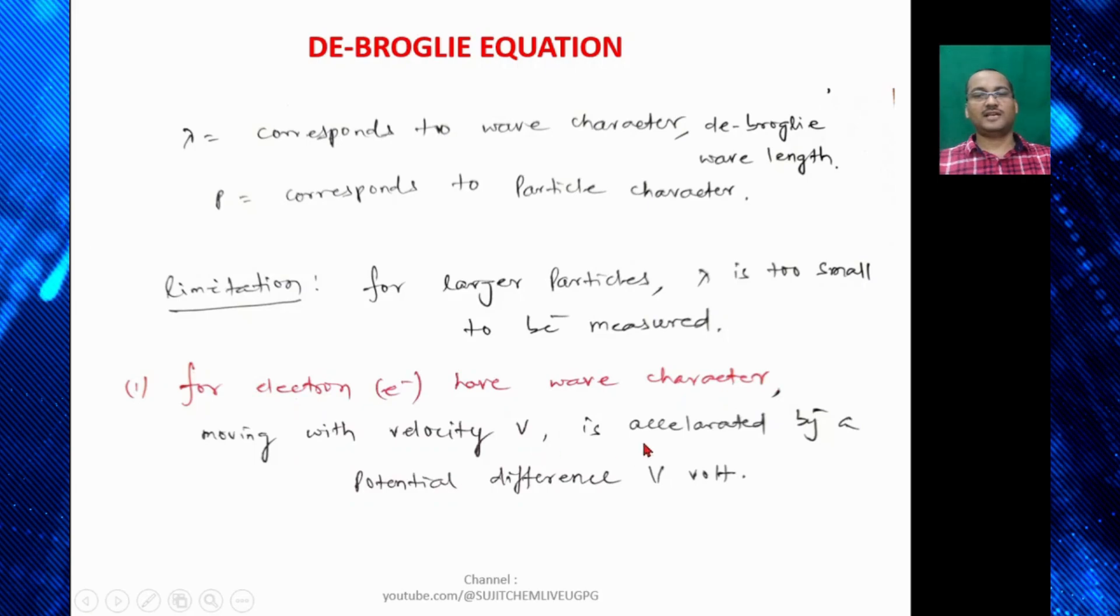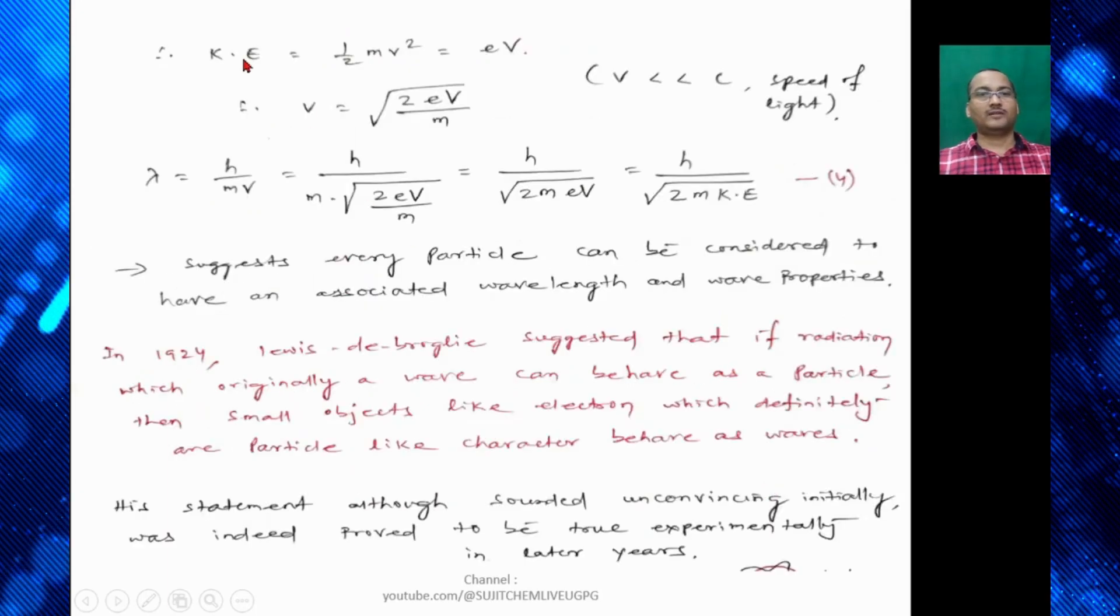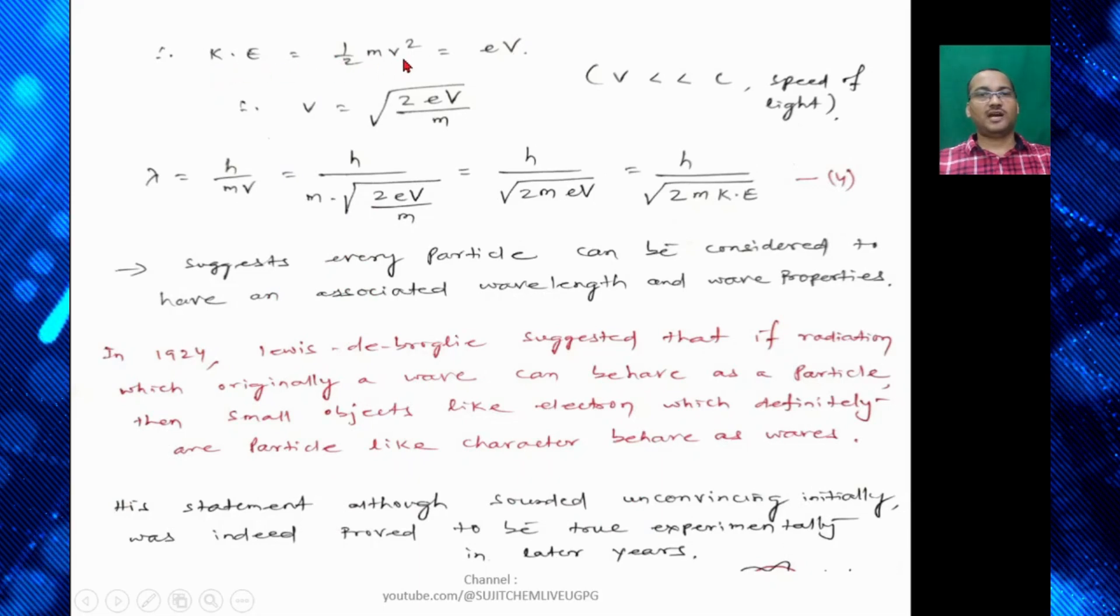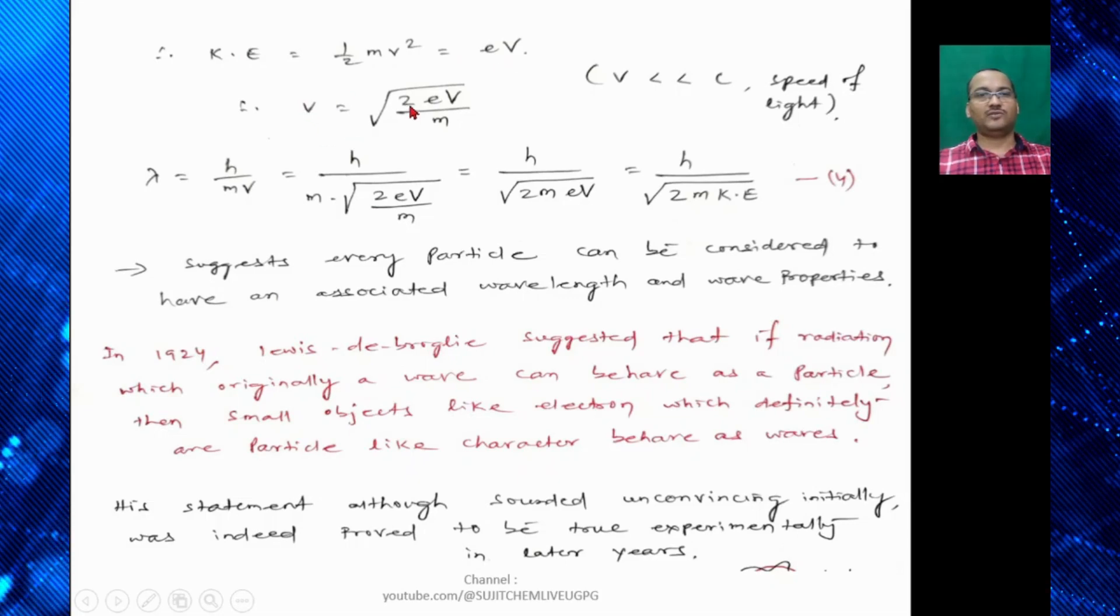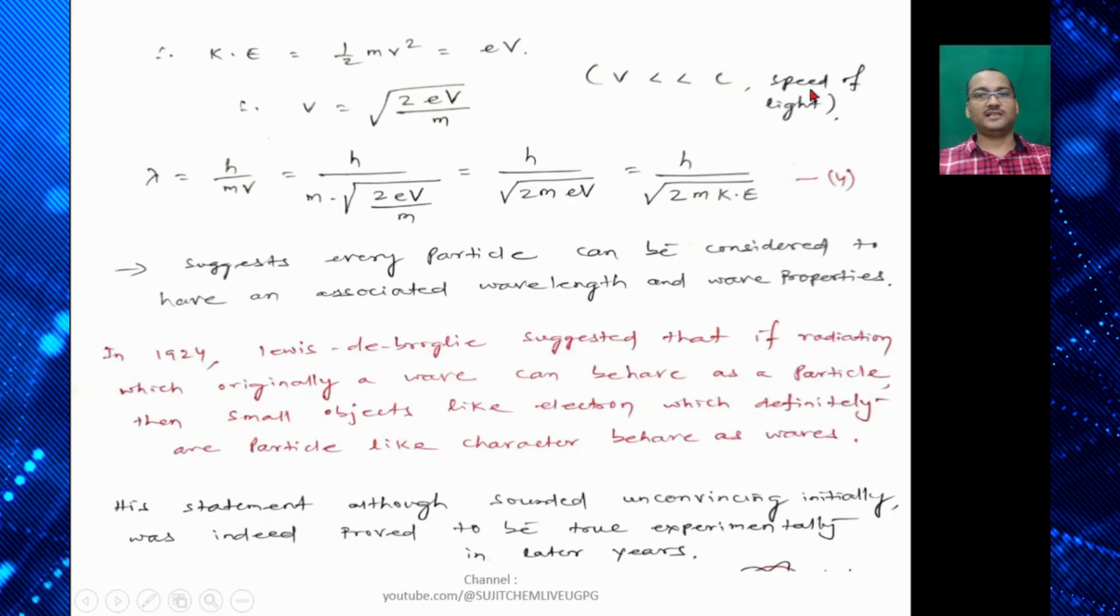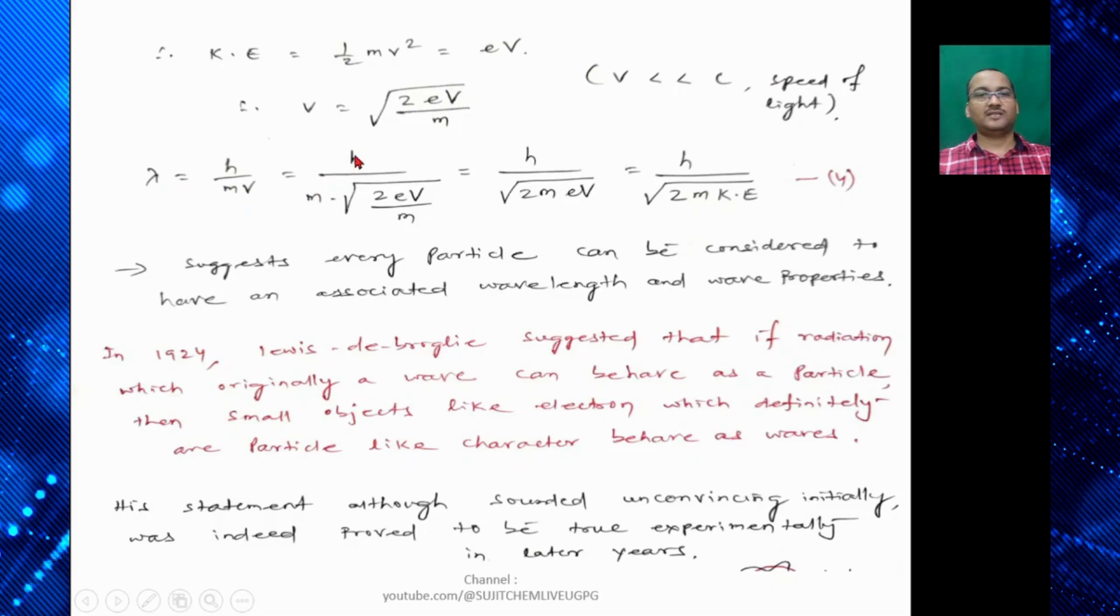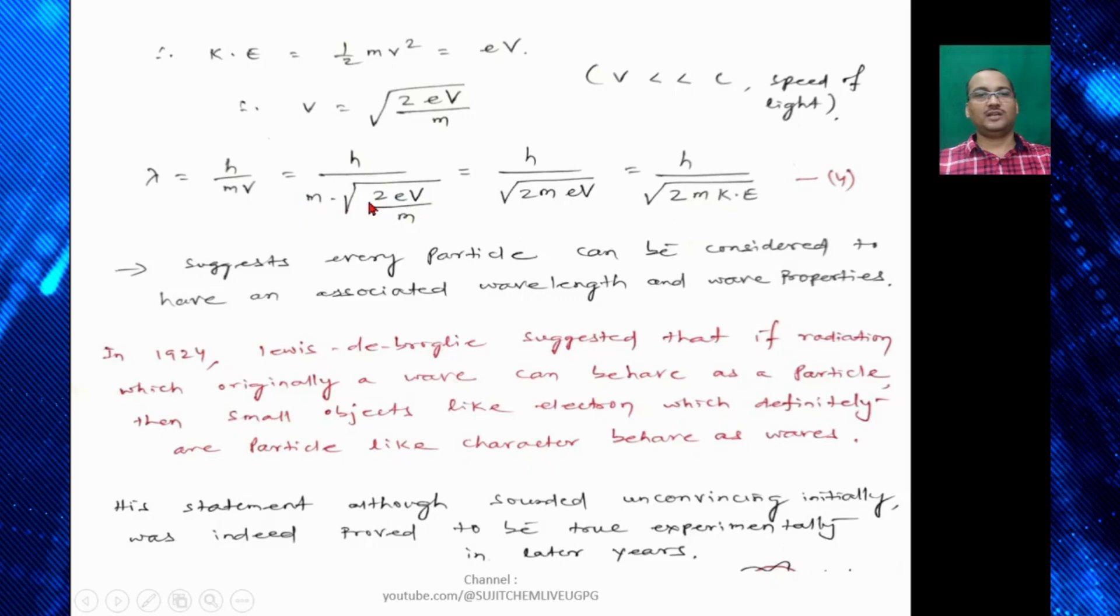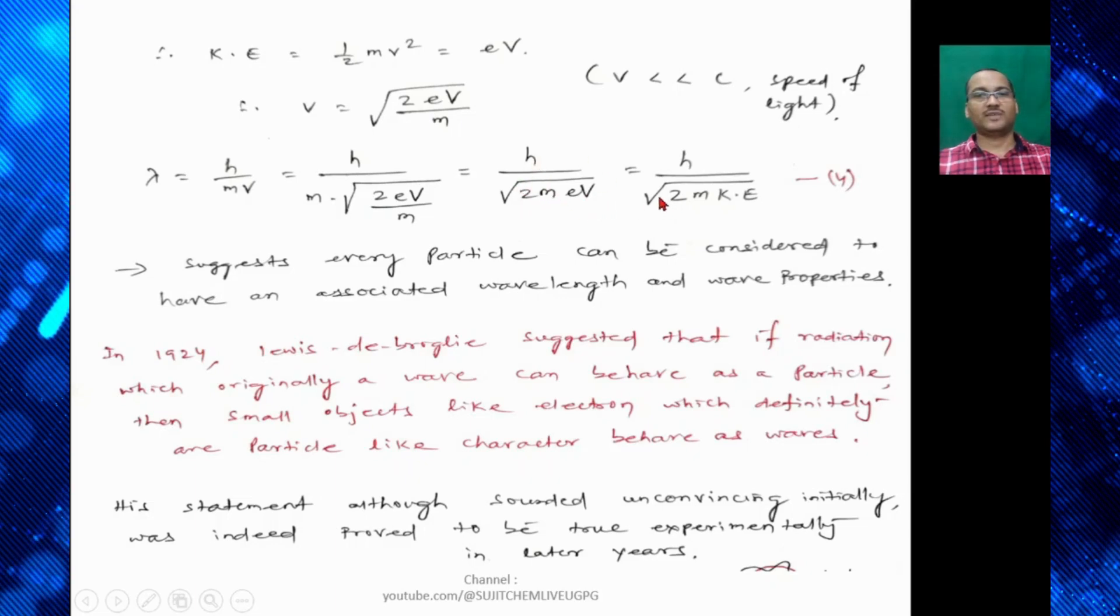Moving with velocity v is accelerated by a potential difference V volts. So kinetic energy = ½mv² that is eV. And so here v = √(2eV/m). So v is less than c that is speed of light. And we know λ = h/mv. So that is equal to h/m × √(2eV/m). So that we can find out as h/√(2meV). That is equal to h/√(2mKE).